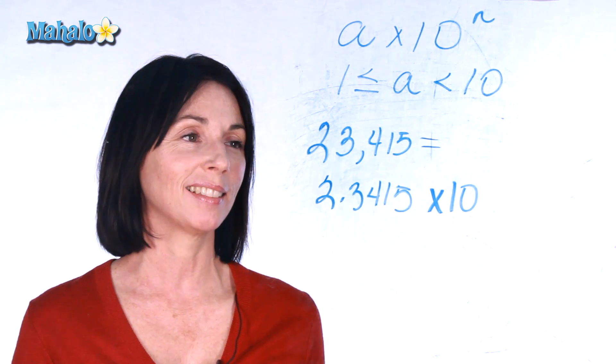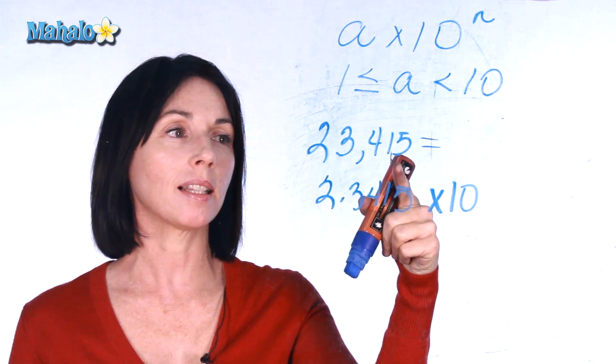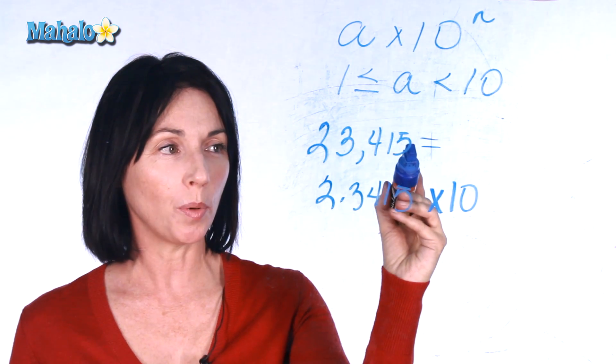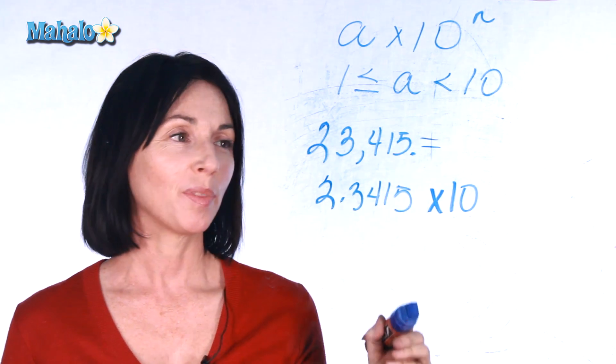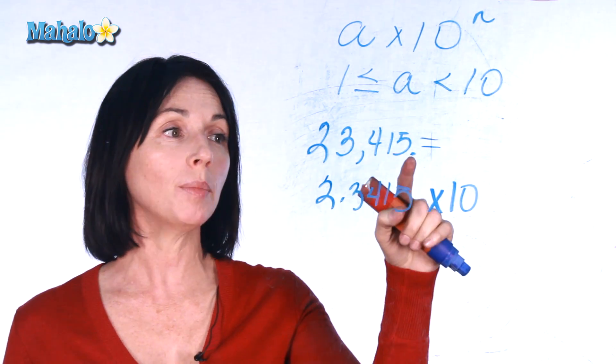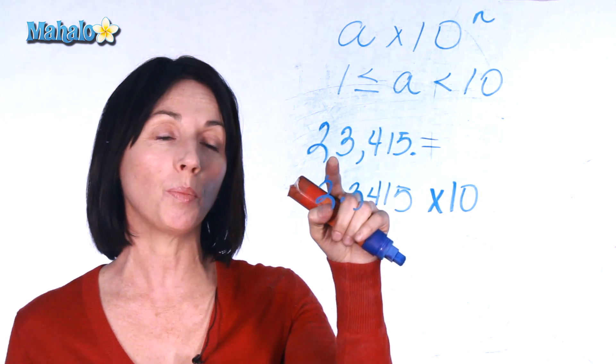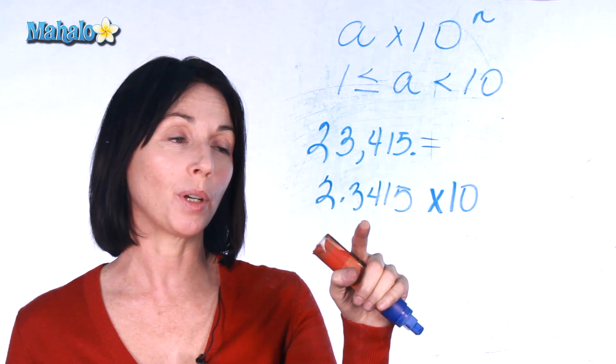Now, here's how you figure out the power of ten. In a whole number like this, even though we don't always see it, the decimal point is sitting right there. So, what I have to do is see how many positions did I move the decimal point to get this number here.